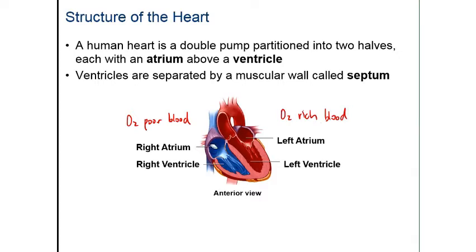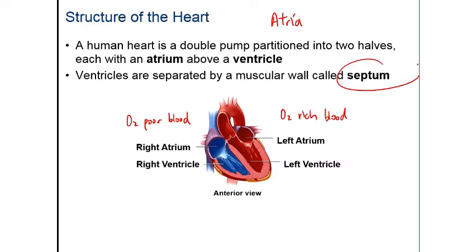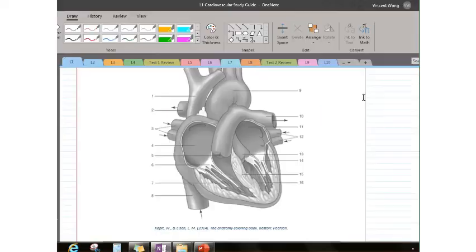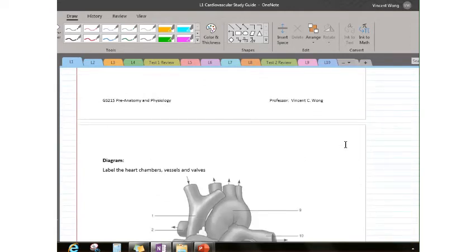The two top chambers of the heart are called the right atrium and the left atrium — the plural of atrium is atria. You have two atria on top and two ventricles at the bottom: the right ventricle and the left ventricle. Since the blood on the right is oxygen-poor and the blood on the left is oxygen-rich, we don't want them mixing — we separate the two halves with a muscular wall called a septum.